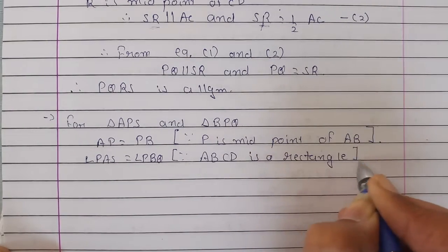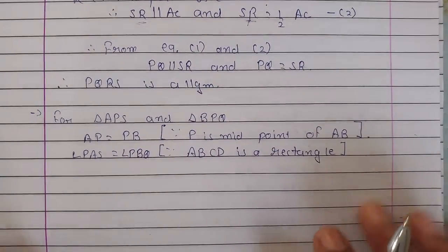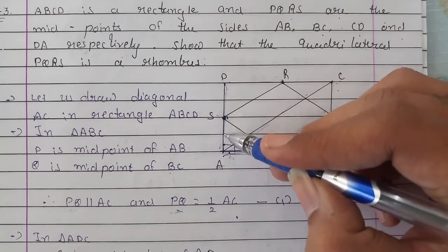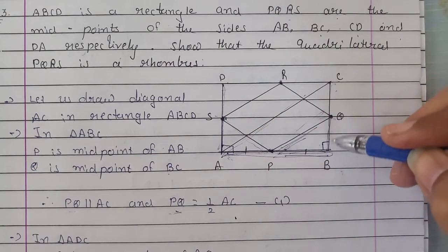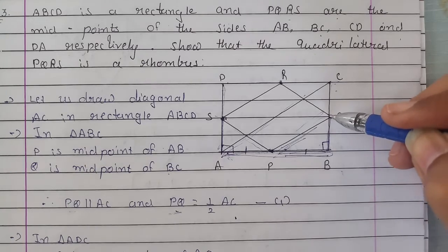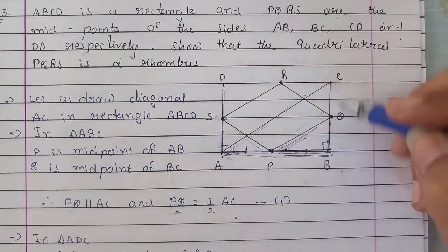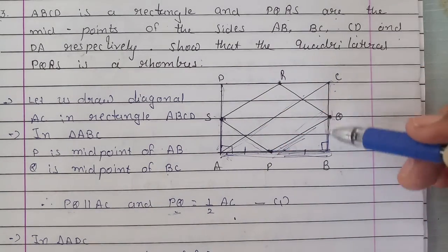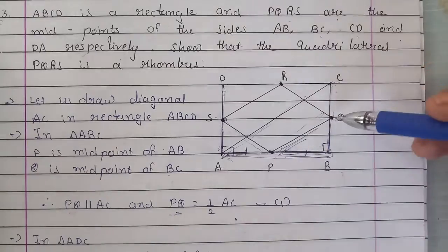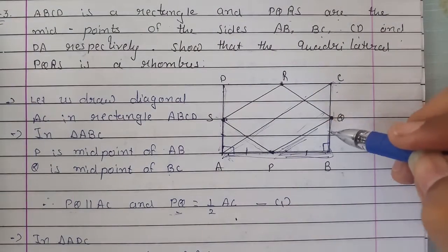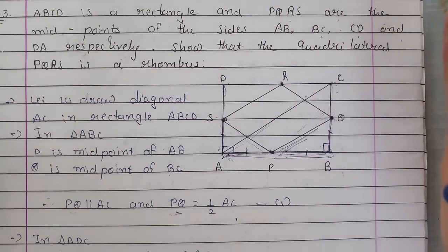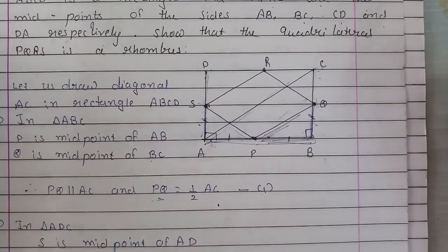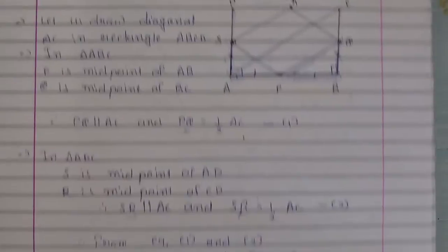What do we have is angle PAS is equal to angle PBQ. The reason is ABCD is a rectangle. And this AS and BQ, these two will be equal. Reason is, this is a rectangle and in the rectangle, opposite sides are equal. If the opposite sides are equal, then the half will be equal. Let's write this thing down so that we can understand better.